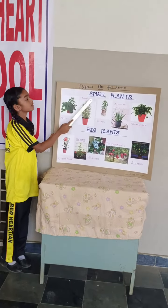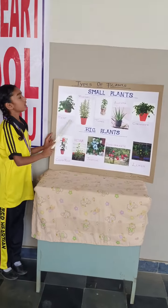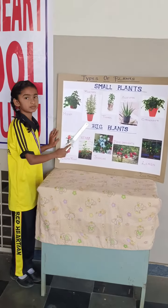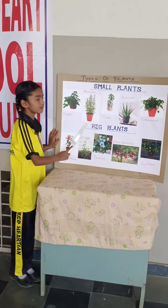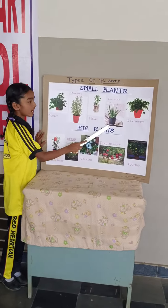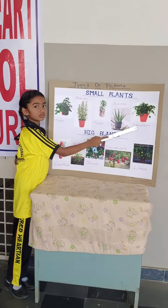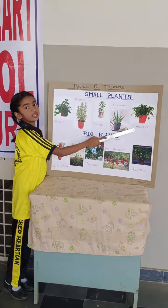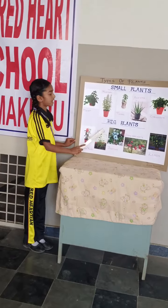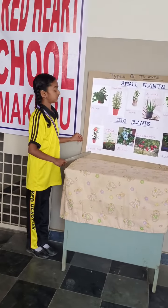Small plants are: Rosemary, Tulasi, Aloe Vera, Coriander.